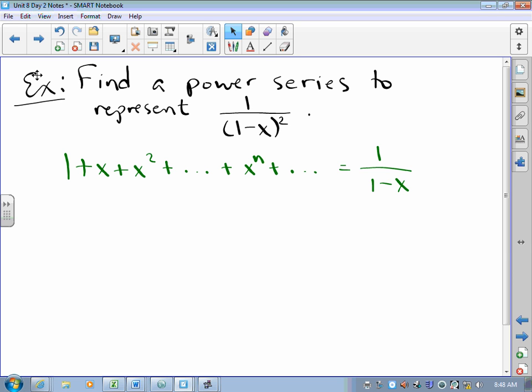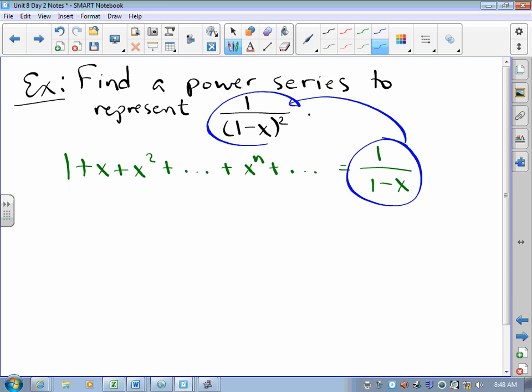And so I have to ask myself, what is the connection between this function and this function? You're thinking, oh, just square it, but I'm thinking, take a derivative. If you take the derivative of (1 - x) to the negative one power, you end up with negative one times (1 - x) to the negative two times negative one.